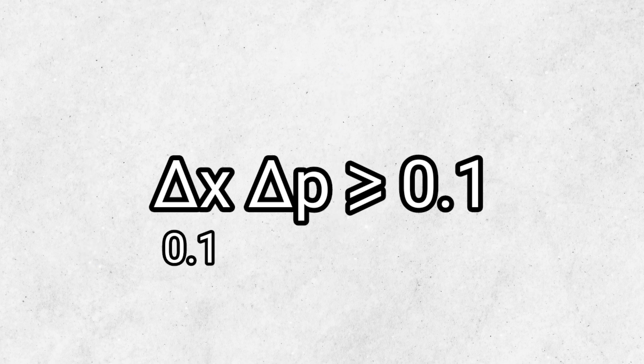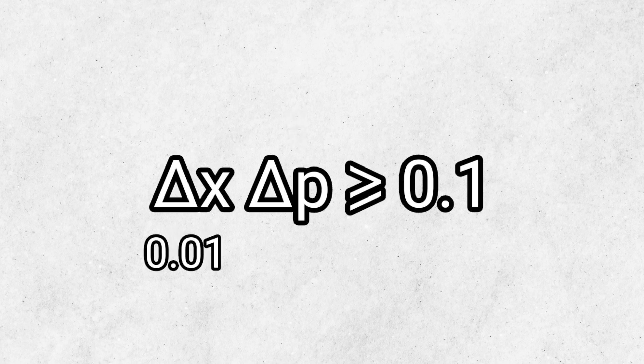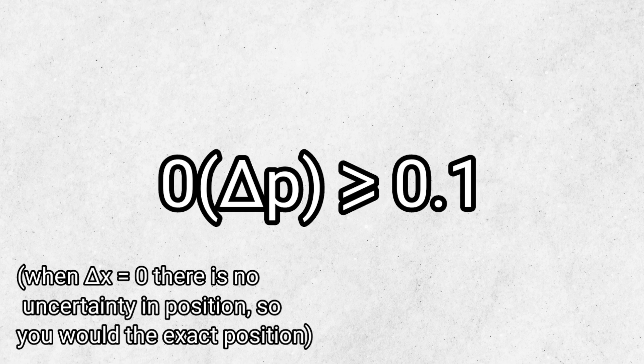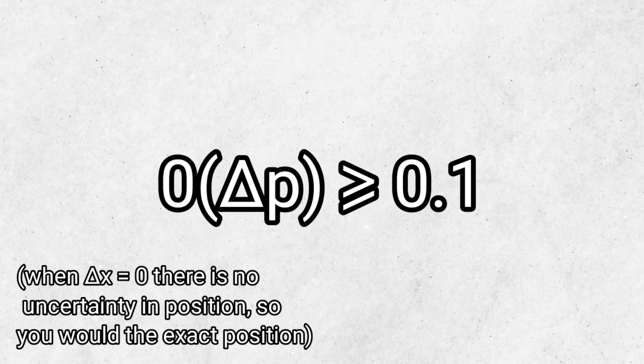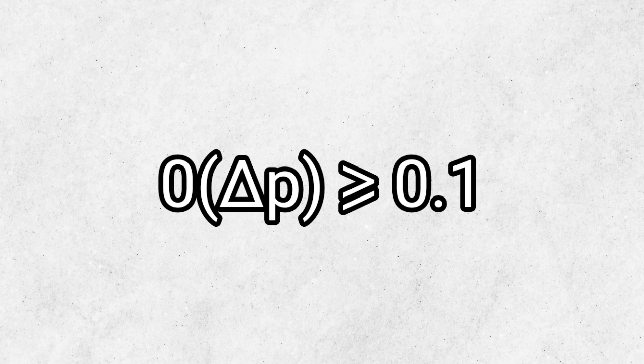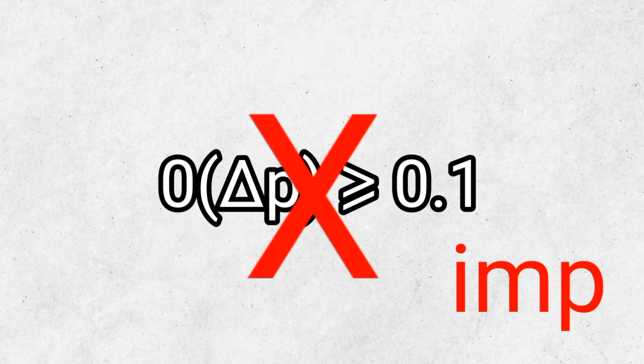For delta x equals 0.1, delta p has to be at least 1. And for 0.01, it has to be at least 10. But when it's 0, there is no possible number multiplied by 0 that's greater than or equal to 0.1, so it is impossible to know the exact position.